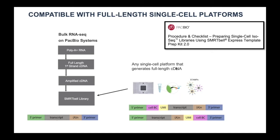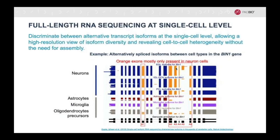Full-length RNA sequencing can be done from both bulk tissues or at the single-cell level. Any single-cell enrichment platform that generates full-length cDNA can be sequenced on the PacBio systems. The benefit of this method is that it allows comprehensive characterization of gene-specific transcripts at the single-cell level.